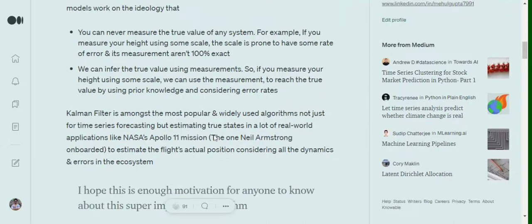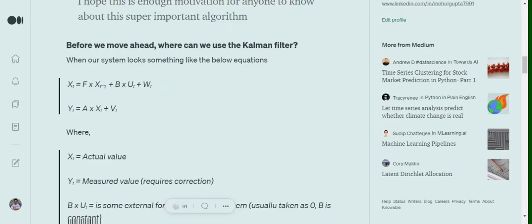Now a Kalman filter is among the most popular and widely used algorithms, not just for time series forecasting, but also for correction of values, also estimating true states of a lot of real world entities. You might be a bit shocked to know that this algorithm was used by NASA in the Apollo 11 mission, where Neil Armstrong landed on the moon. So this algorithm is very, very important. First of all, let's understand where we can apply the Kalman filter.